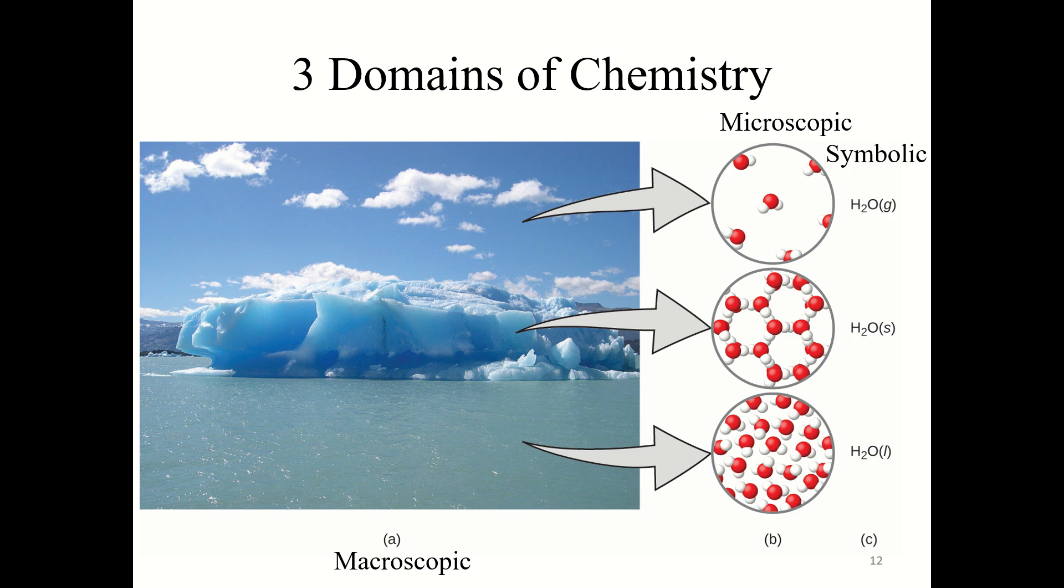Last part of this section, I want to hit on the three domains of chemistry. We're going to be looking at the macroscopic, the microscopic, and the symbolic domain. The macroscopic domain is things in the physical world, things that we can see with our eyes. Like a large block of ice, or a big iceberg, or ice cubes in a glass. This is the macroscopic domain, these are things that we can see with our eyes and that we can touch and interact with easily. The microscopic domain, things we can't see with our eyes, so things at the molecular domain.